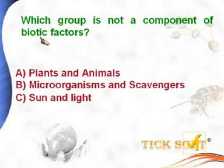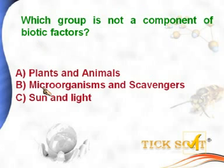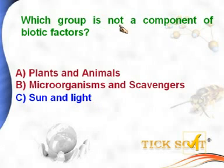Which group is not a component of biotic factors? Options: (a) plants and animals, (b) microorganisms and scavengers, (c) sun and light. Plants and animals are living things — they are biotic. Microorganisms and scavengers are also living — biotic. Sun and light are non-living, so they are abiotic and not a component of biotic factors. Option C is the answer.